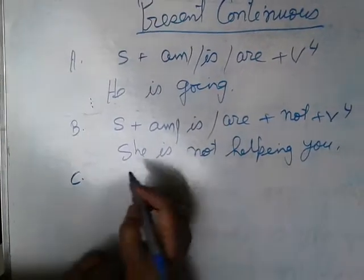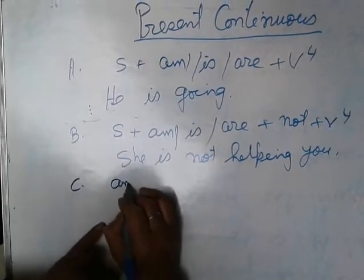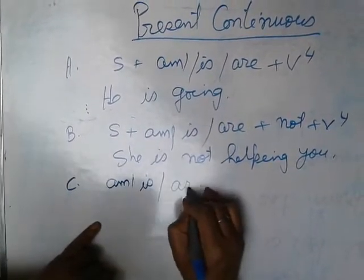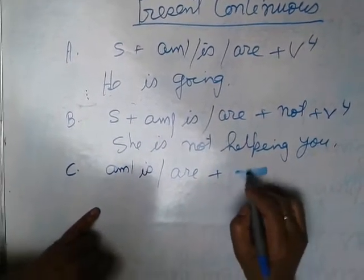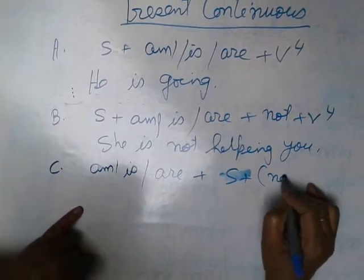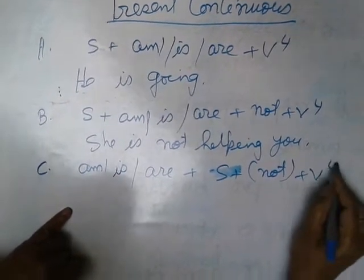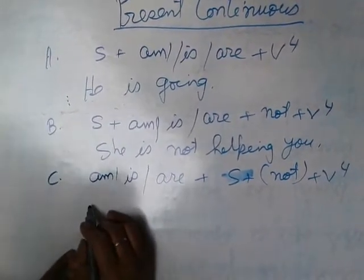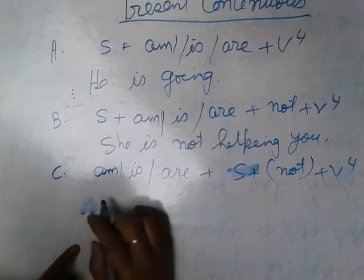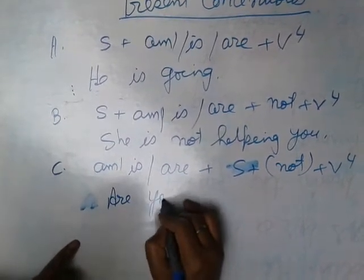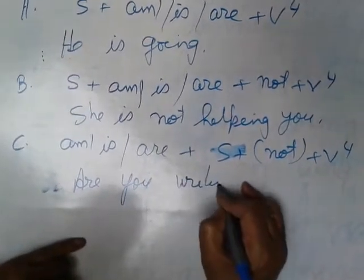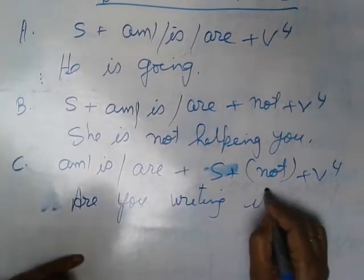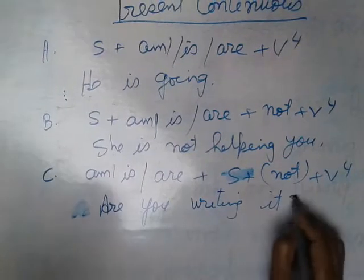C number is interrogative. Am/is/are, not - not is given in bracket because you can use it, you cannot use it - subject, V4. Are they writing it? Sign of interrogation is there.